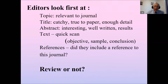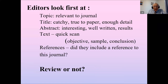When an editor first looks at your paper, they want to see that the topic is relevant to the journal. Secondly, they look at the title — it must be catchy, interesting, reflect what is in the paper, and have enough detail so anyone reading the journal index knows exactly what the paper is about. Then they look at the abstract, which must be interesting, well written, and include some results. This year the Asia Pacific Journal of Public Health will probably receive close to a thousand papers submitted.